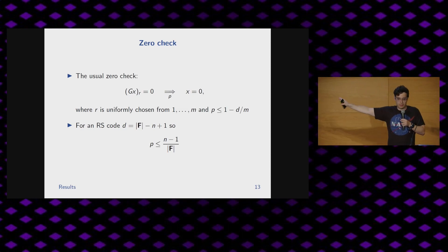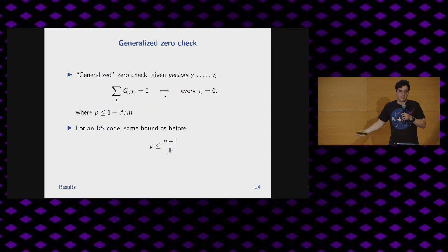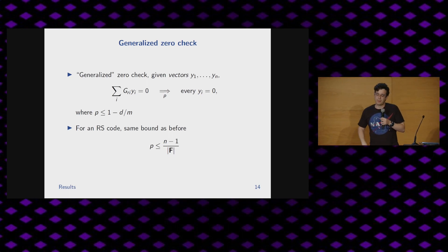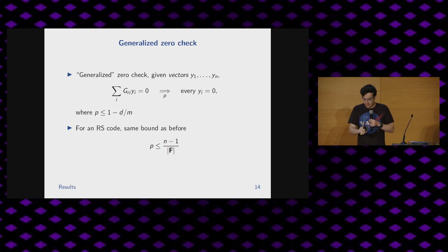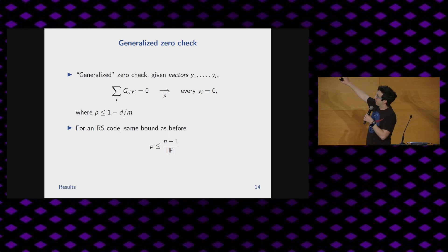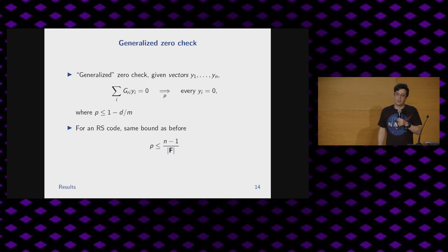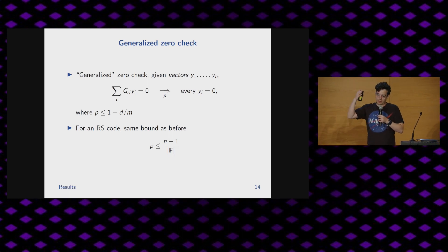A generalized zero check: I don't want to check if a single vector is zero — I want to check if a bunch of vectors are zero. We're going to smash all the vectors together by choosing a random row of G and using that row as the coefficients for a linear combination of Y1 through Yn. Then check if that resulting vector is zero. If so, with high probability the original vectors must have been zero, and for a Reed-Solomon code the bound is degree divided by field size.